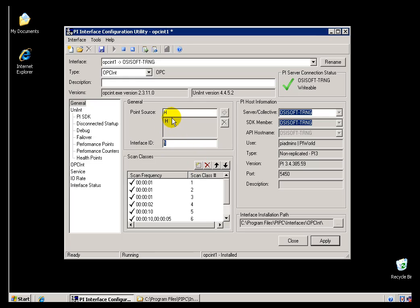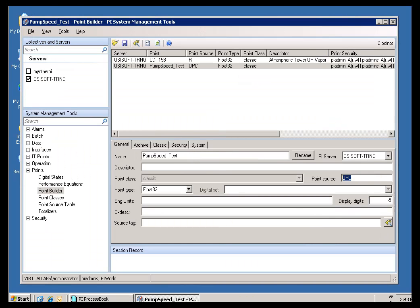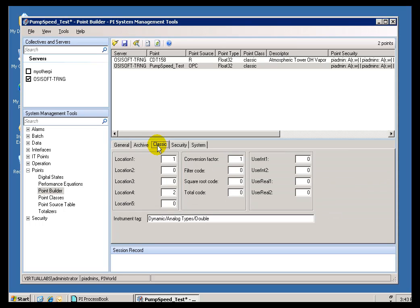If you've got more than one running, you're going to have to name one of those Interfaces Interface ID 1 and the other one Interface ID 2. And then when you configure your Tags, you would put an H here for the Point Source, and then it's all the way over here in the Classic Tab. That's where you would change Location Code 1. You'd make that either a 1 or a 2, depending on which copy of that Interface it's associated with.